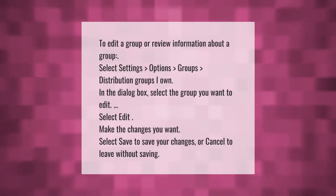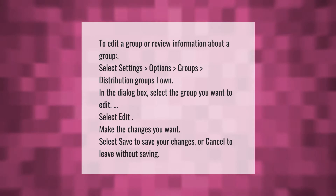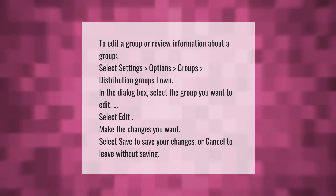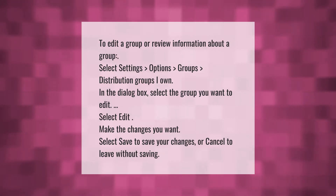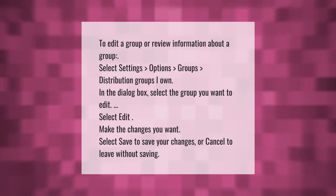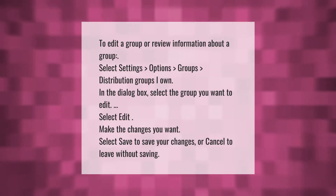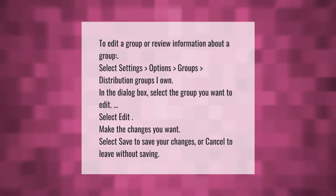To edit a group or review information about a group, select Settings, Options, Groups, Distribution Groups I Own. In the dialog box, select the group you want to edit, select Edit, make the changes you want, then select Save to save your changes or Cancel to leave without saving.